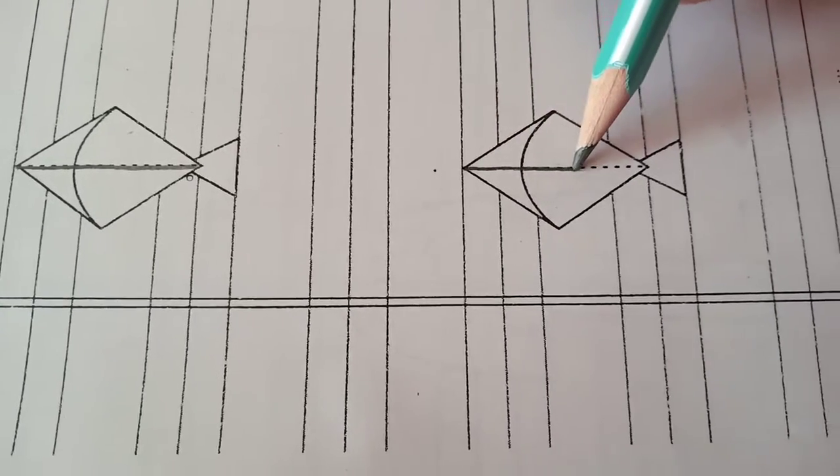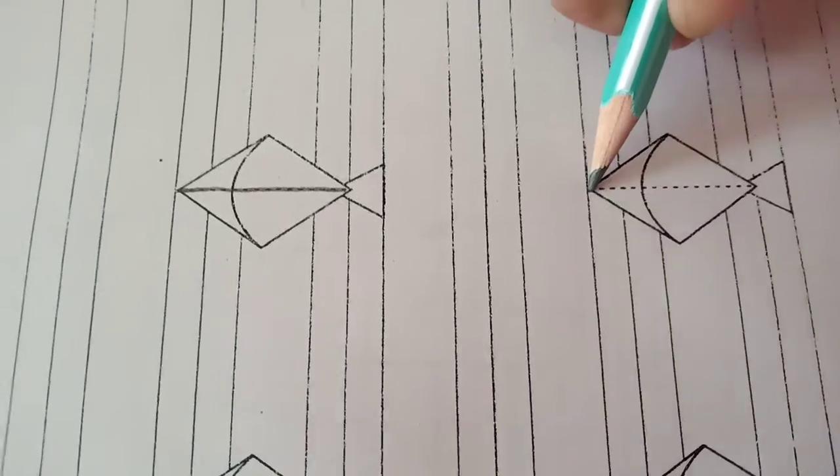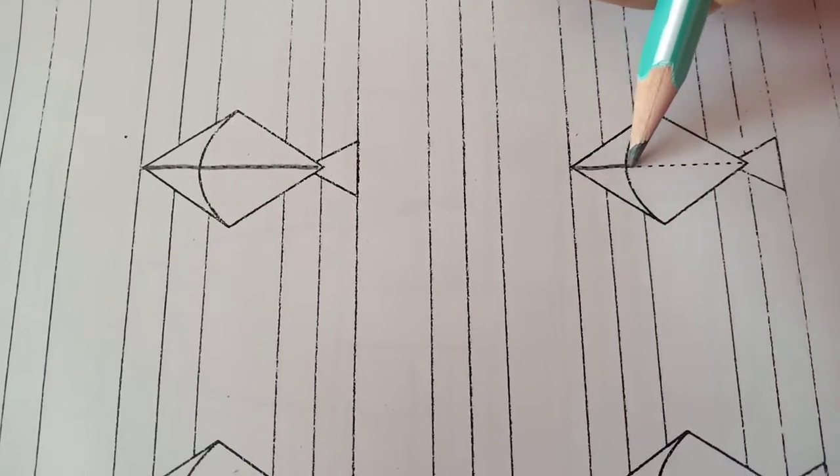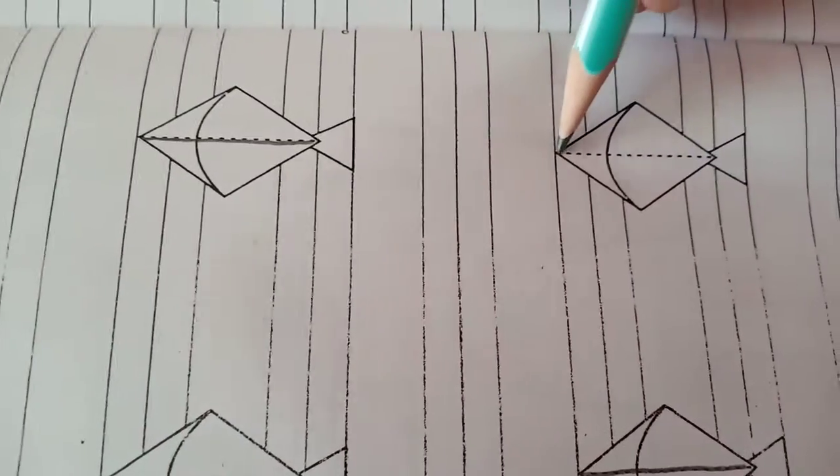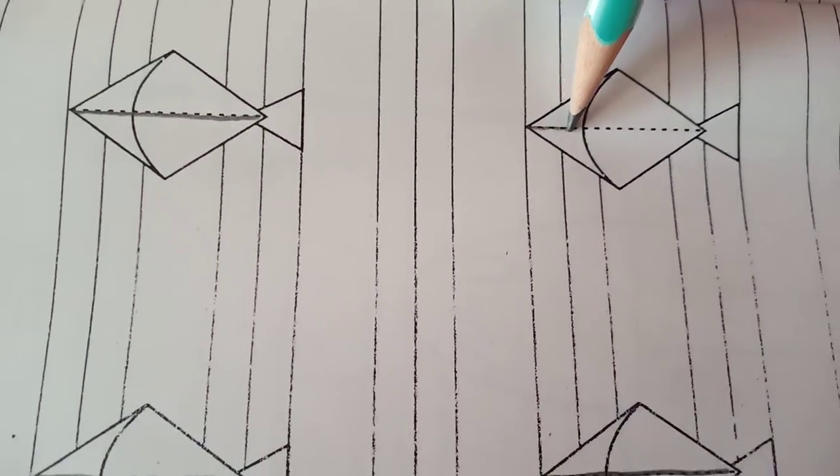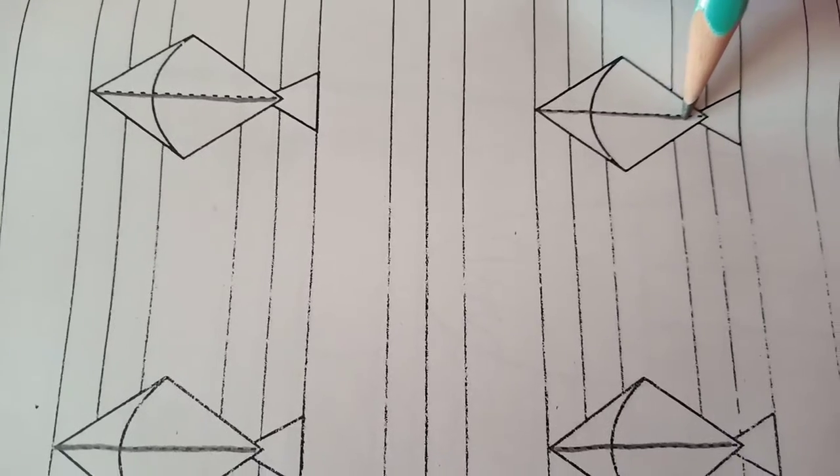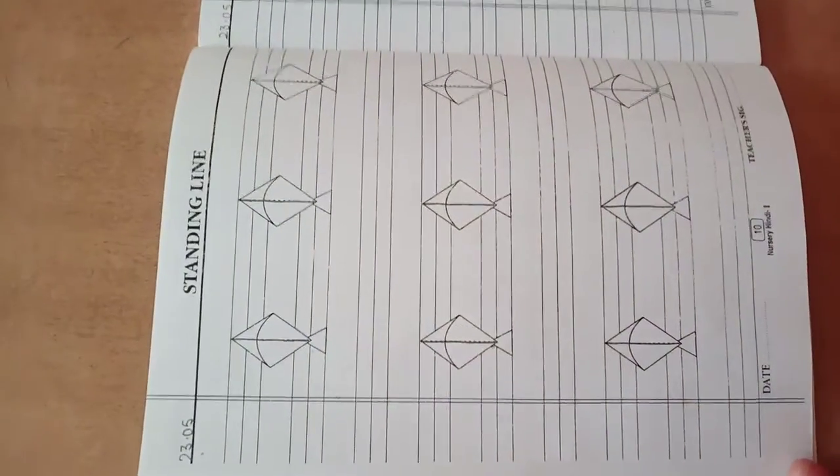Go down, down, down. Put your pencil on the first dot. Go down, down, down. Put your pencil. Go down, down, down. Come on the last dot. Very good. Yay, I did it.